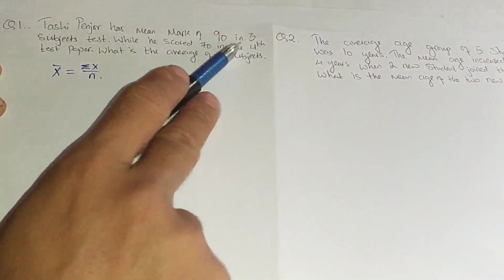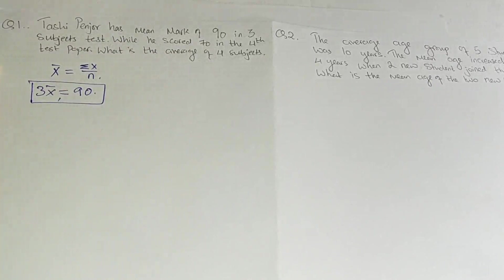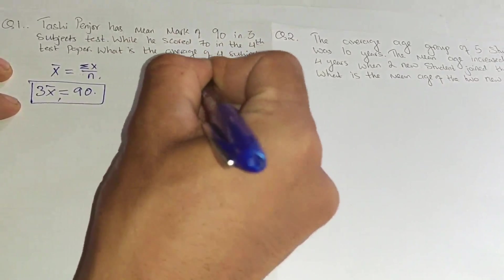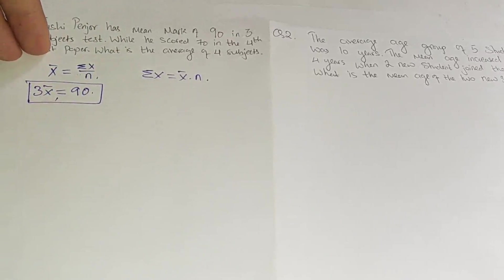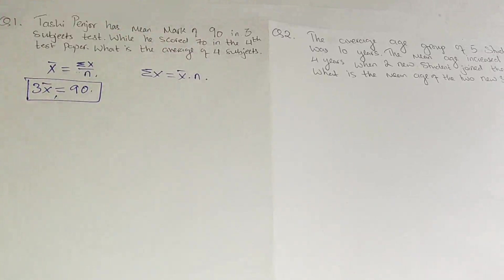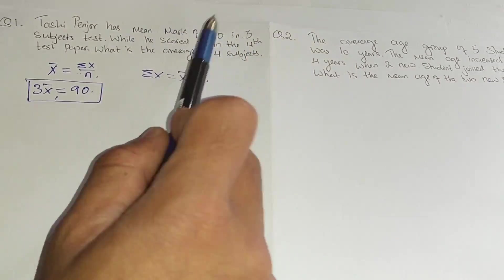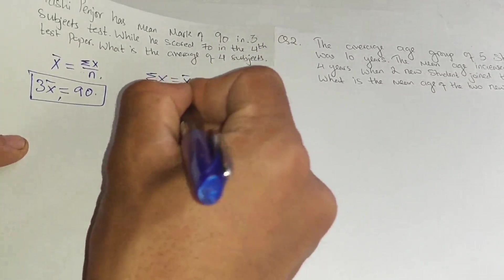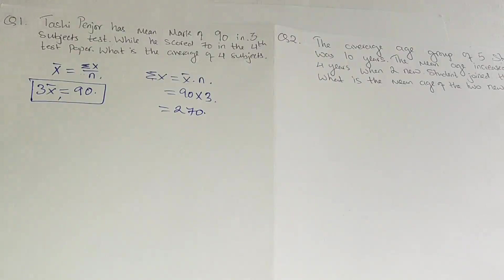For 3 subjects with mean 90, we rearrange: sigma X = X-bar multiplied by n. So sigma X = 90 × 3 = 270. Now we have the sum of 3 subjects which is 270.